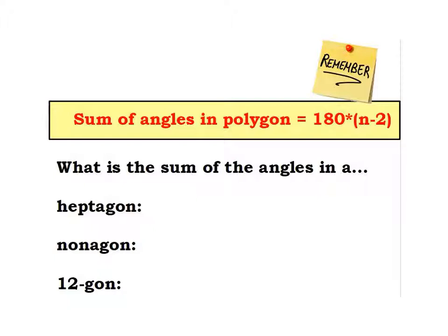The first thing we're going to look at is a theorem that states the sum of the angles in any polygon will always equal 180 times (n minus 2), where n represents the number of sides. So if you had a pentagon, that'd be 5 sides — you would take 5 minus 2, which is 3, times 180. There's a reason that works, and you can look in your textbook to see where it comes from, but we're just going to jump in and use this formula.